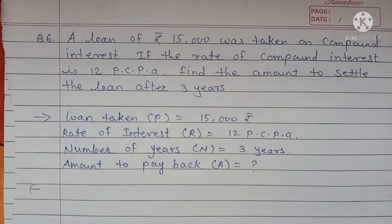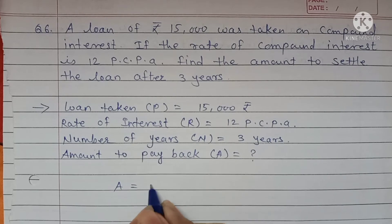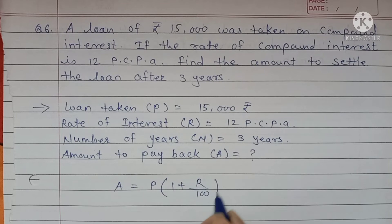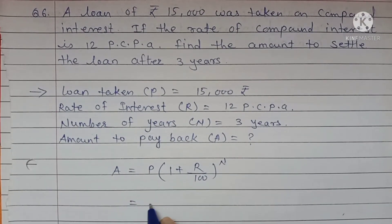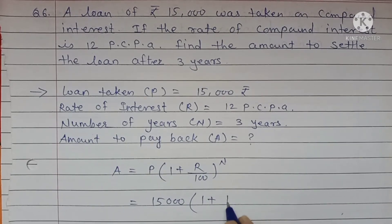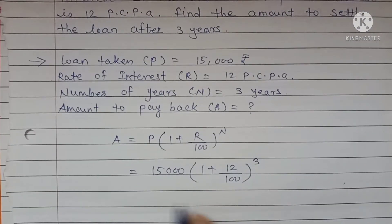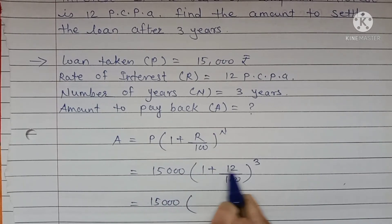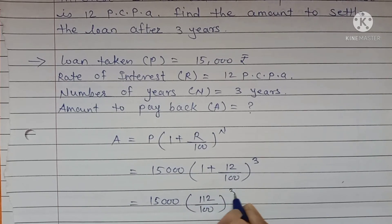And amount to payback means you can find out A. A is equal to P into bracket 1 plus R upon 100 bracket raise to N. P is 15,000. 1 plus R is 12 upon 100 bracket raise to 3. 100 once a 100, 100 plus 12, 112 upon 100 bracket raise to 3.